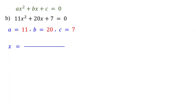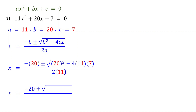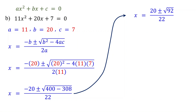Next, write down the quadratic formula. Then, substitute the values of a, b, and c into the formula. Now, simplify this. Inside the square root, 20 squared is 400. 4 times 11 is 44, and 44 times 7 is 308. In the denominator, 2 times 11 is 22. 400 minus 308 is 92.